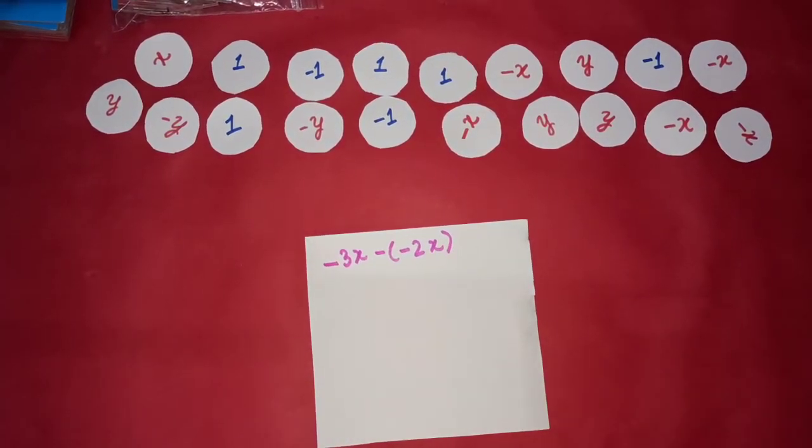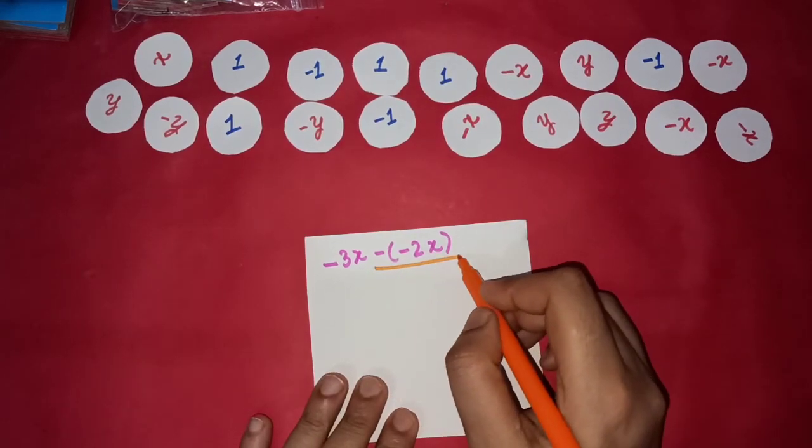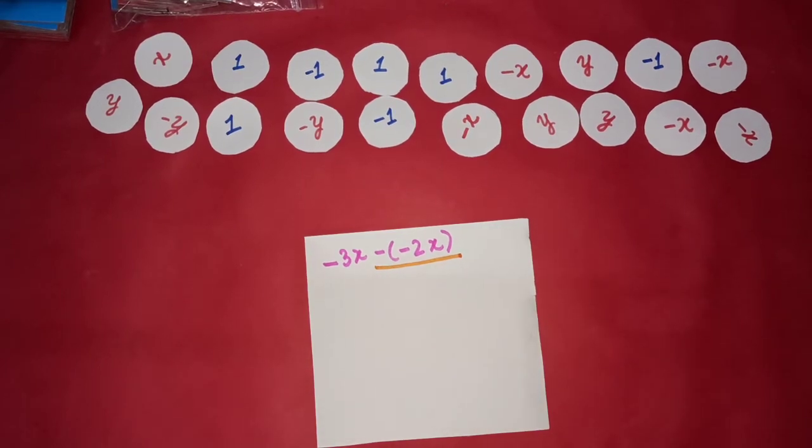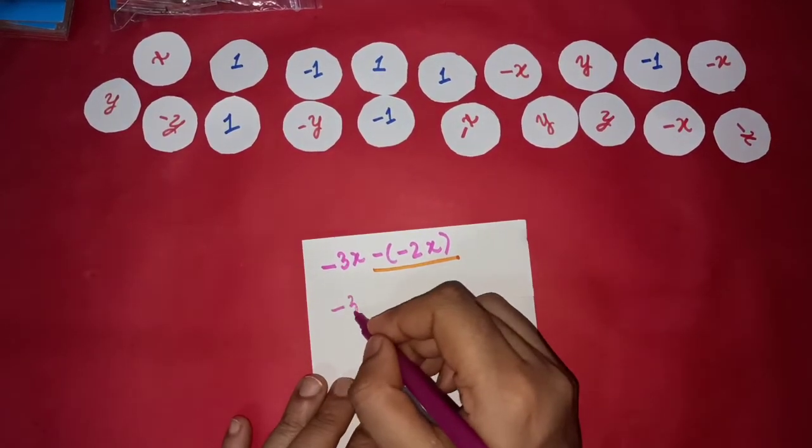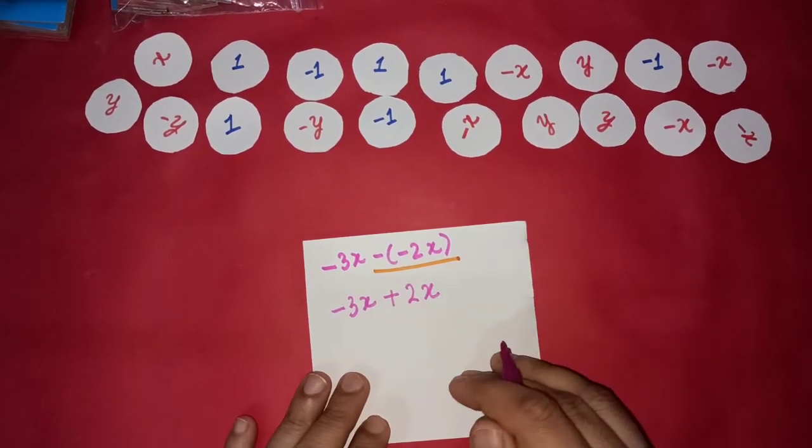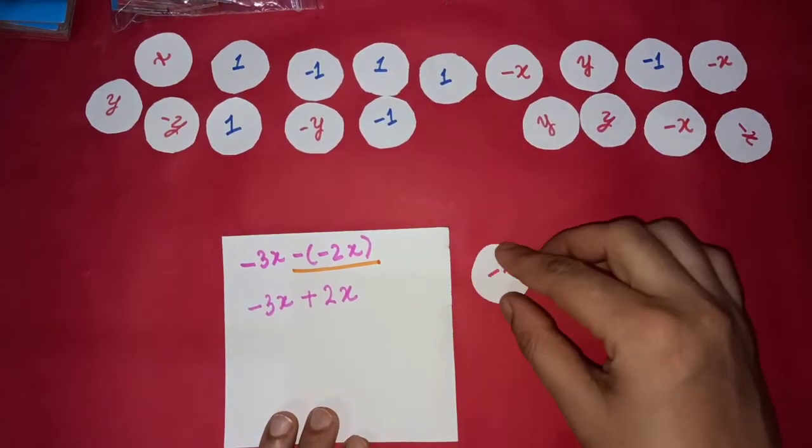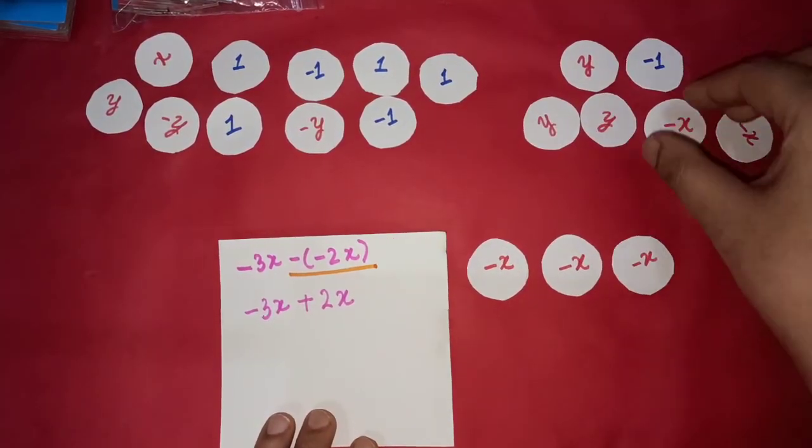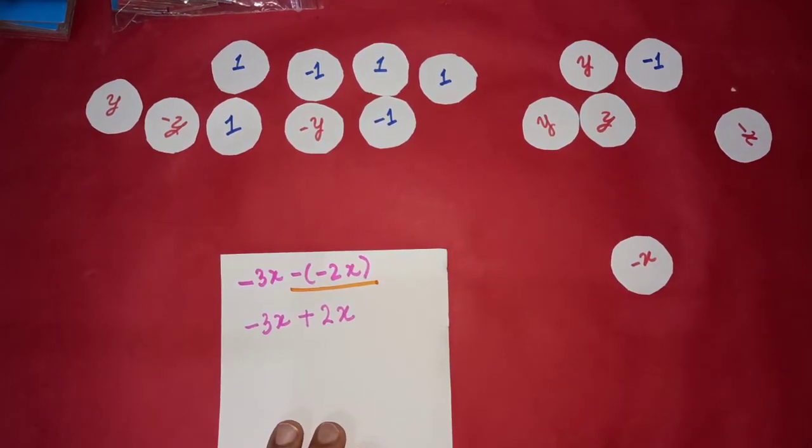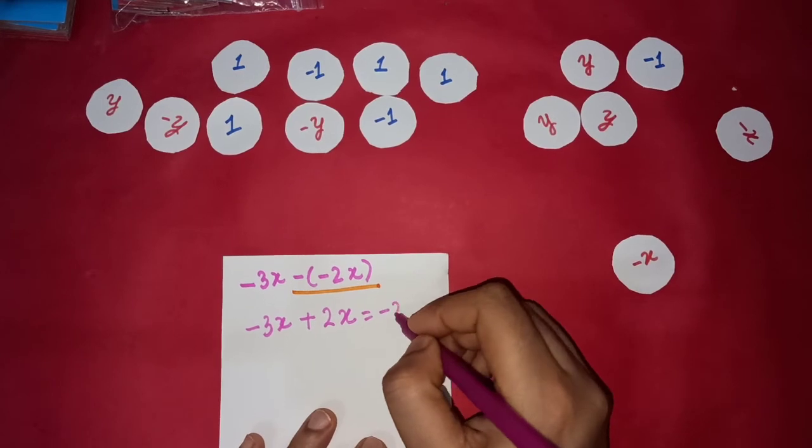Again, just concentrate on this part. We have to flip the 2 negatives. When we flip the 2 negatives, what do we get? We get positive 2x. So let's now see how it will look like. So we get 2 0 pairs. I am going to take them away. And I am left with negative x.